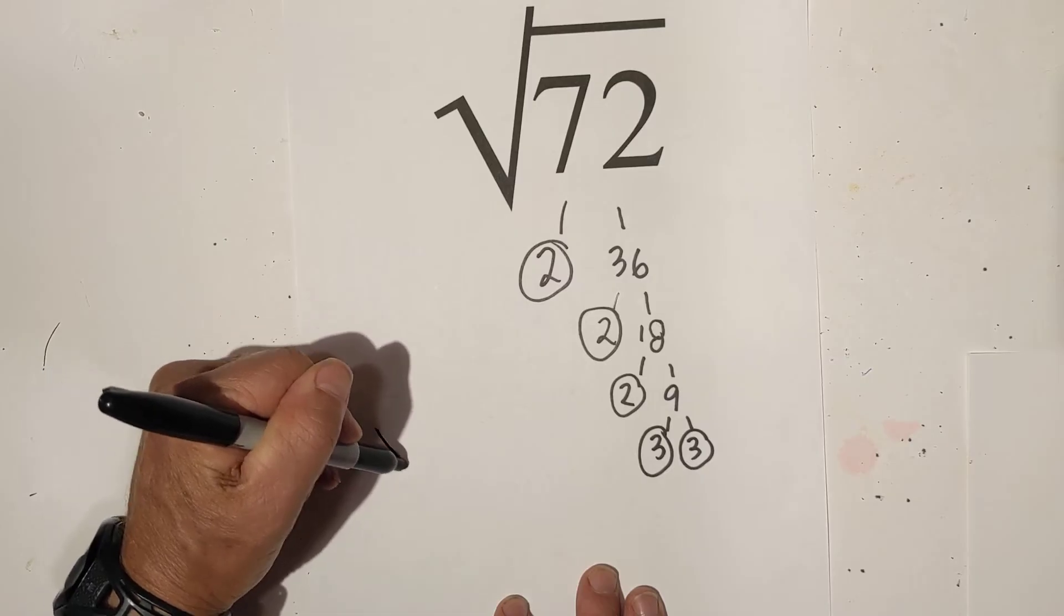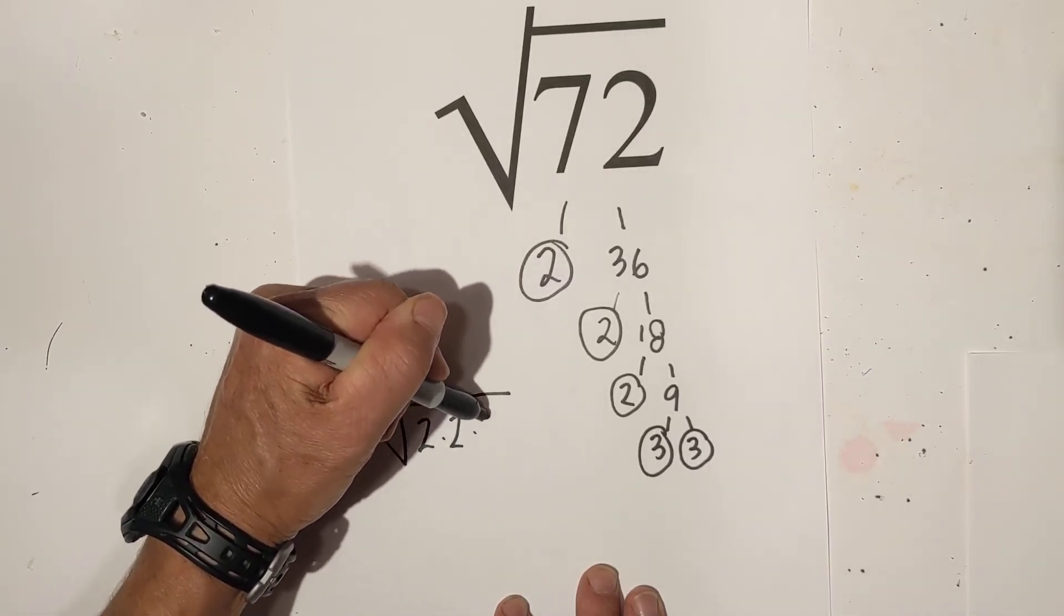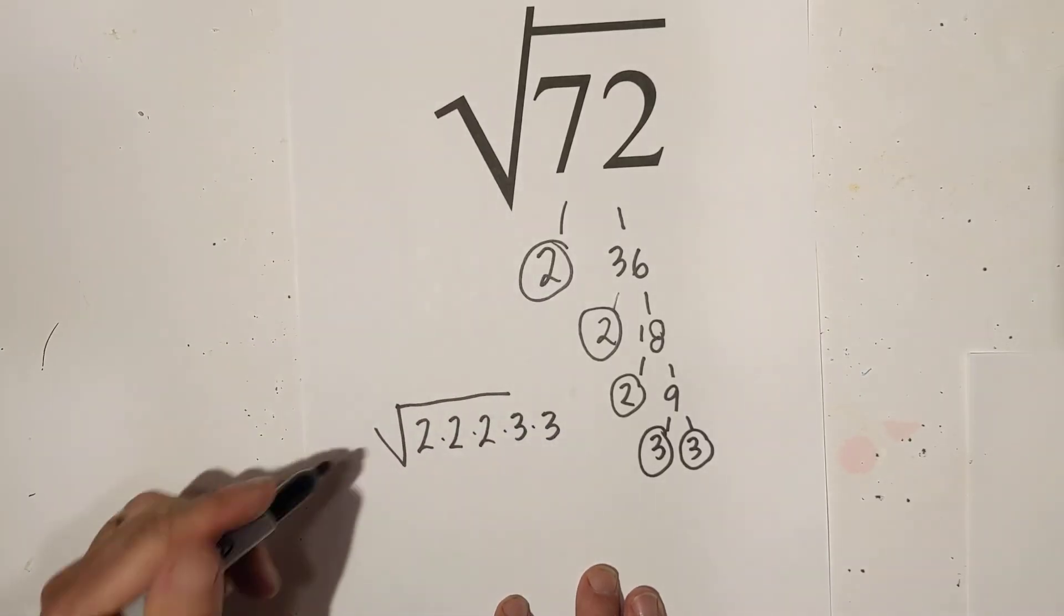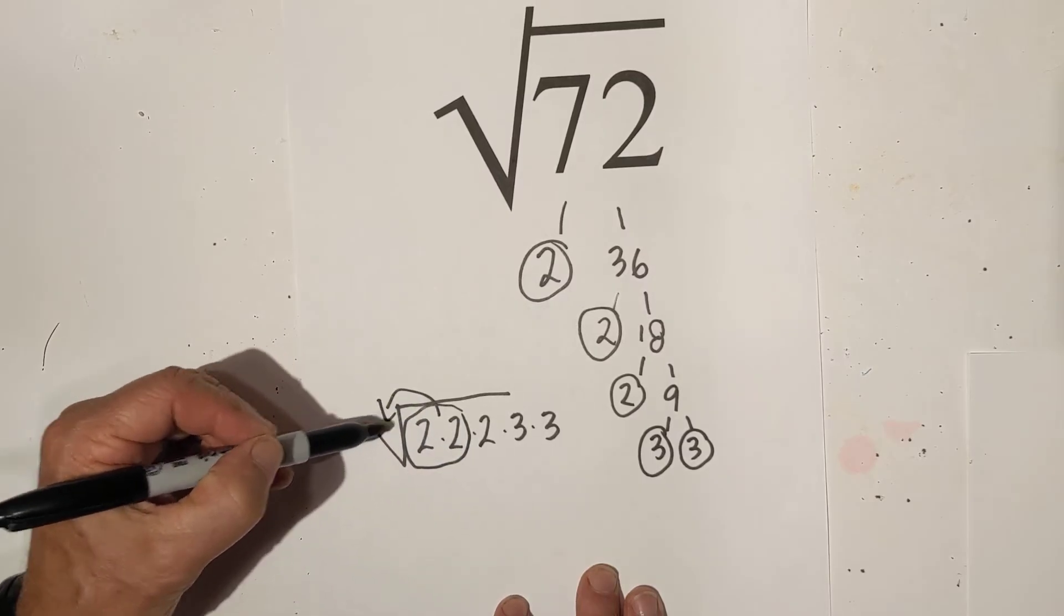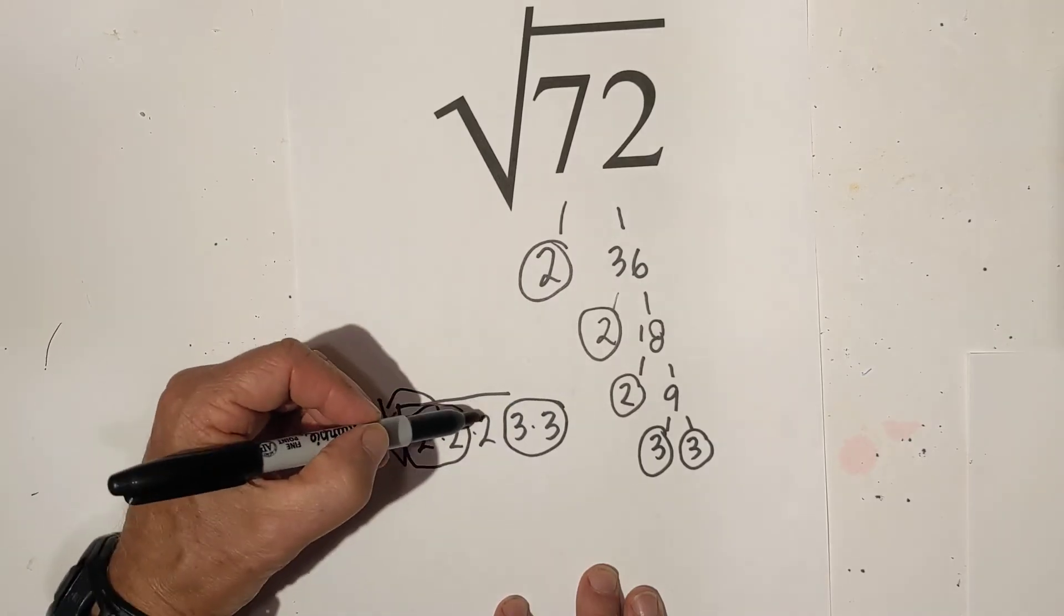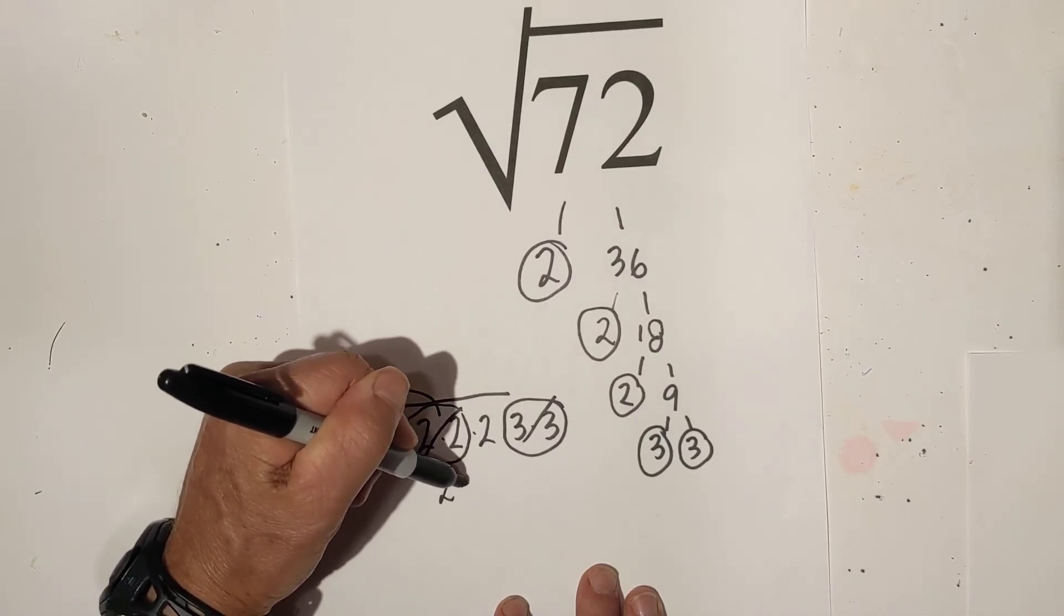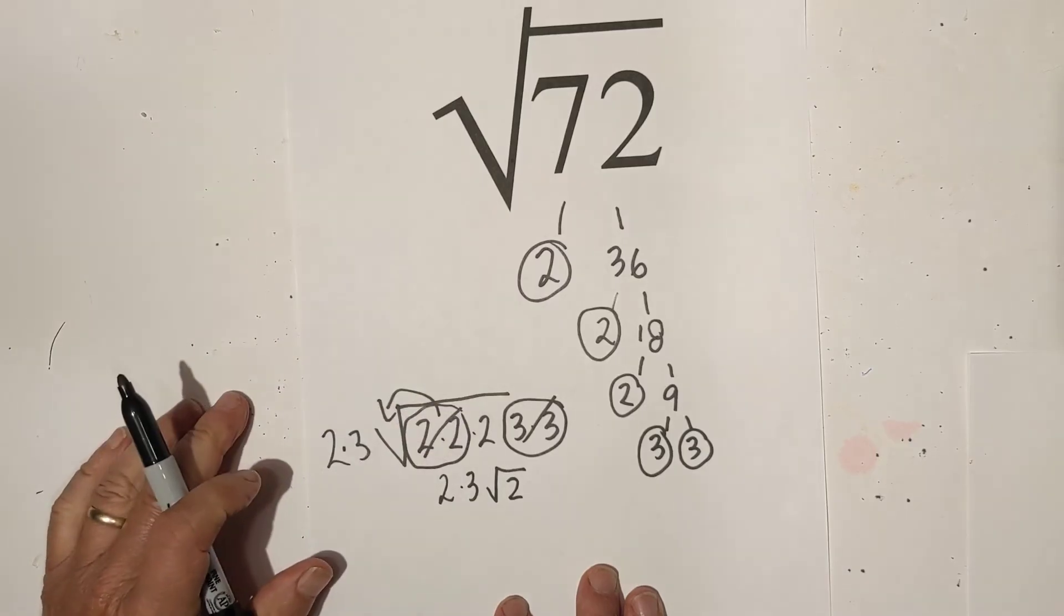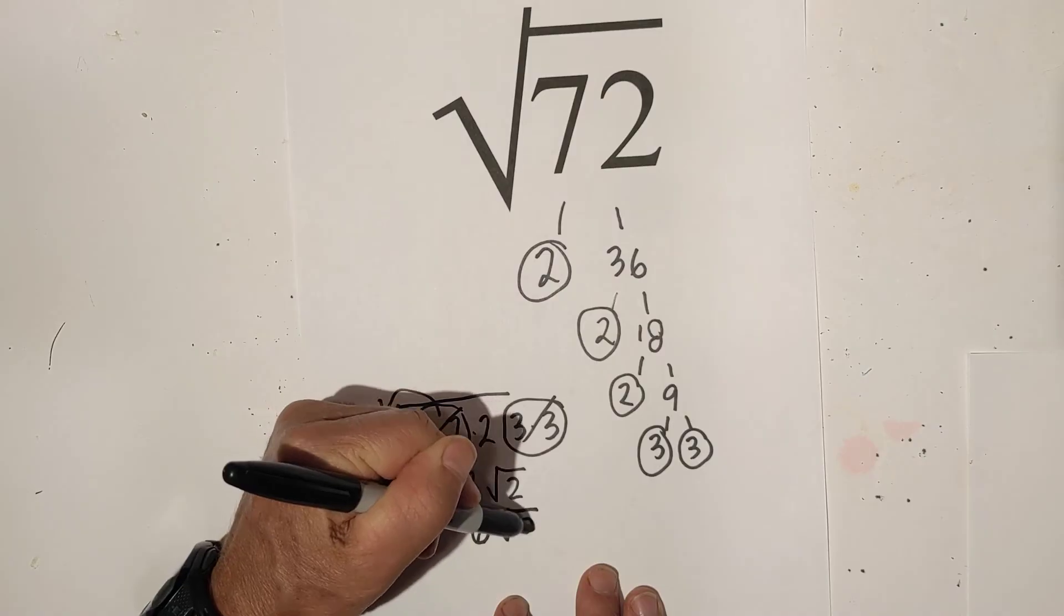Now let's rewrite them. We have two, two, two, three, three. Now let's pull out pairs. So here is a pair. So we have got a two here. And here is another pair. So we've got a three. And then all we have left is two. So let me rewrite this. We have two times three square root two. Now two times three is six. So it is six square root two.